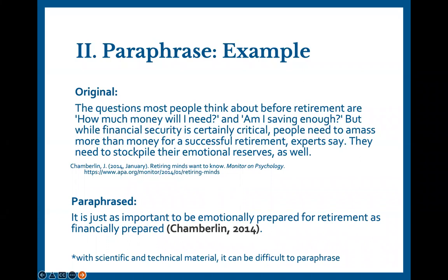It can be easier to paraphrase some material rather than others. Scientific and technical material may use terminology that cannot be referred to as something else. You should restructure the sentences if you can and rephrase any non-technical vocabulary. If you're having difficulty with quoting or paraphrase, you should make an appointment with the Writing Center for assistance.